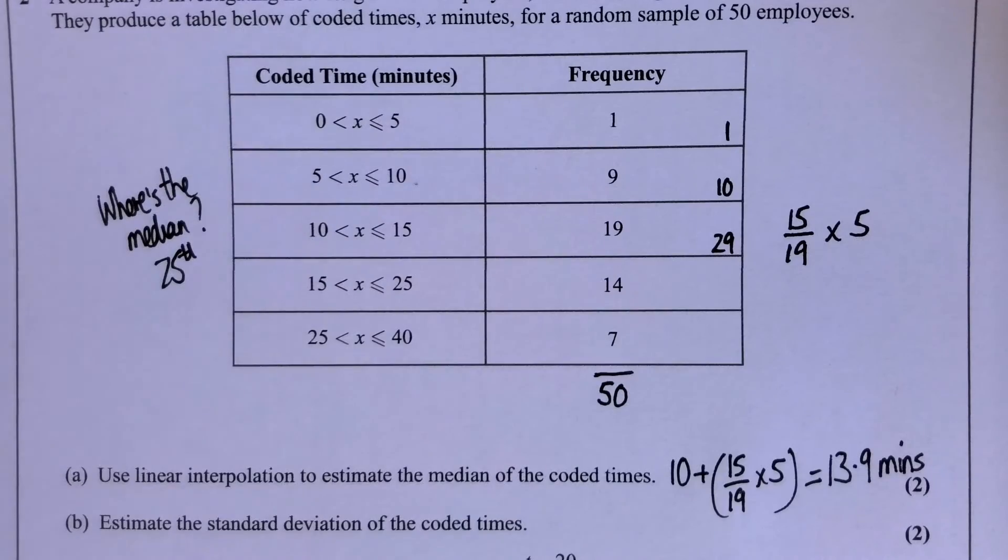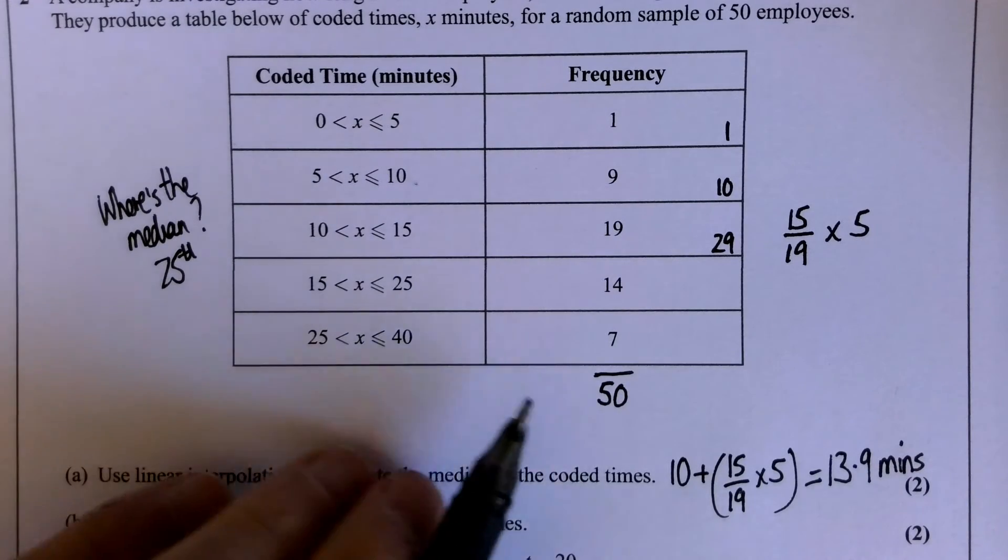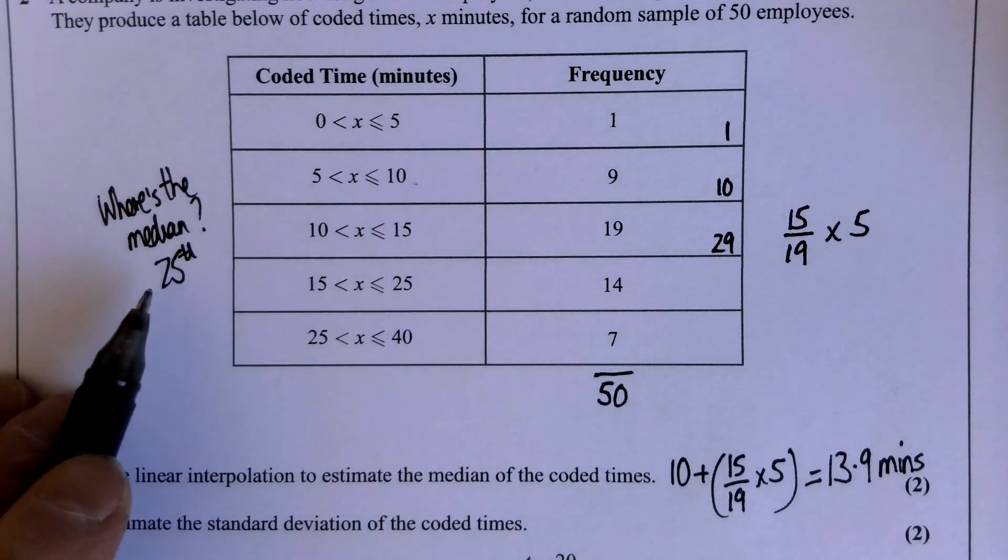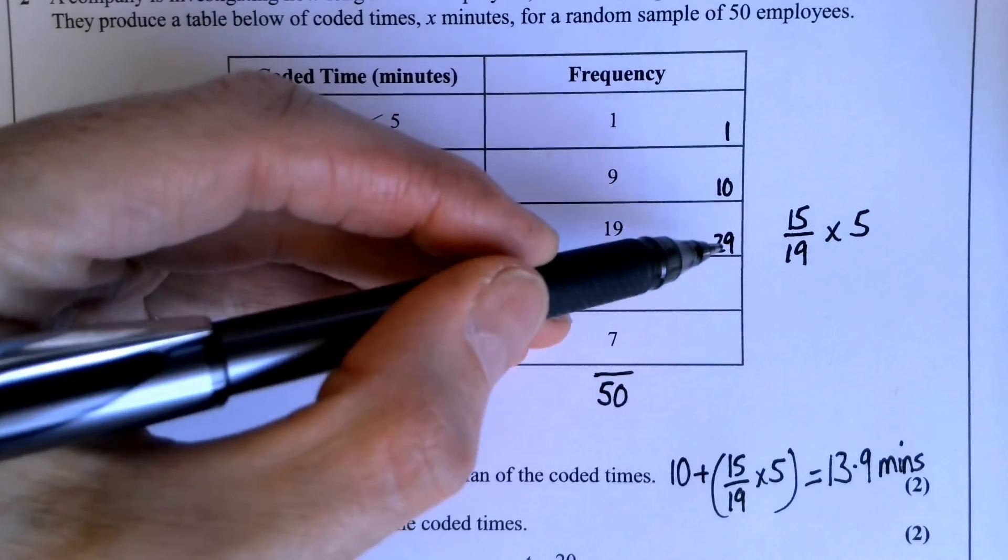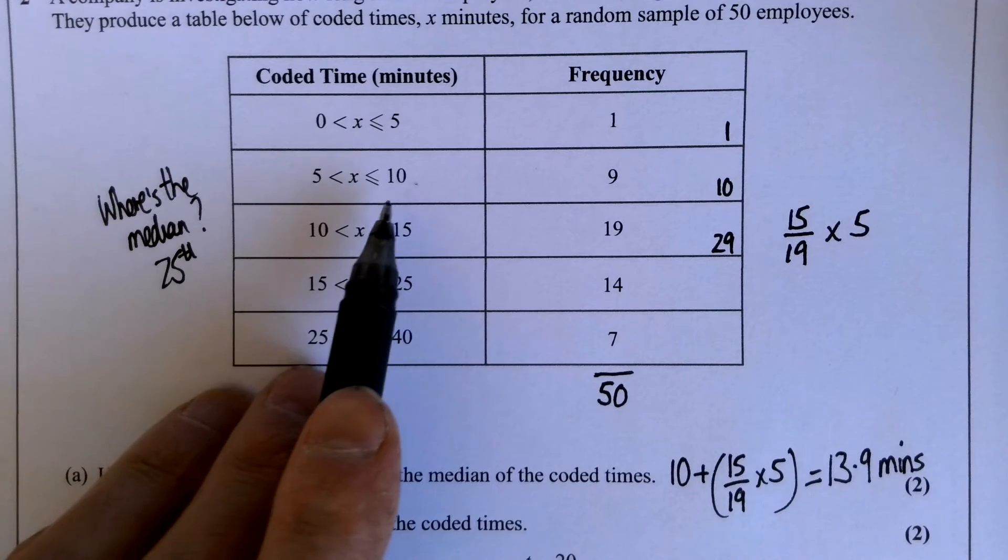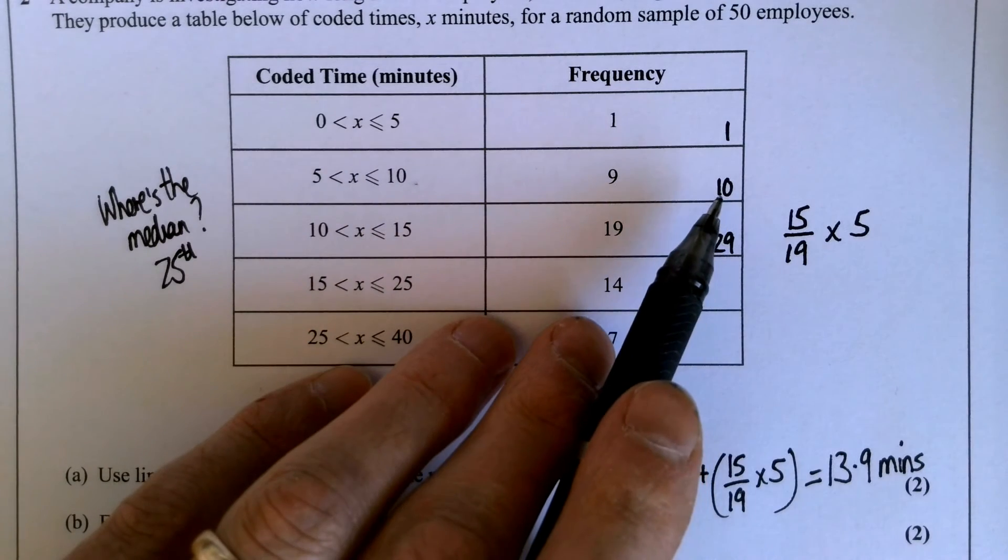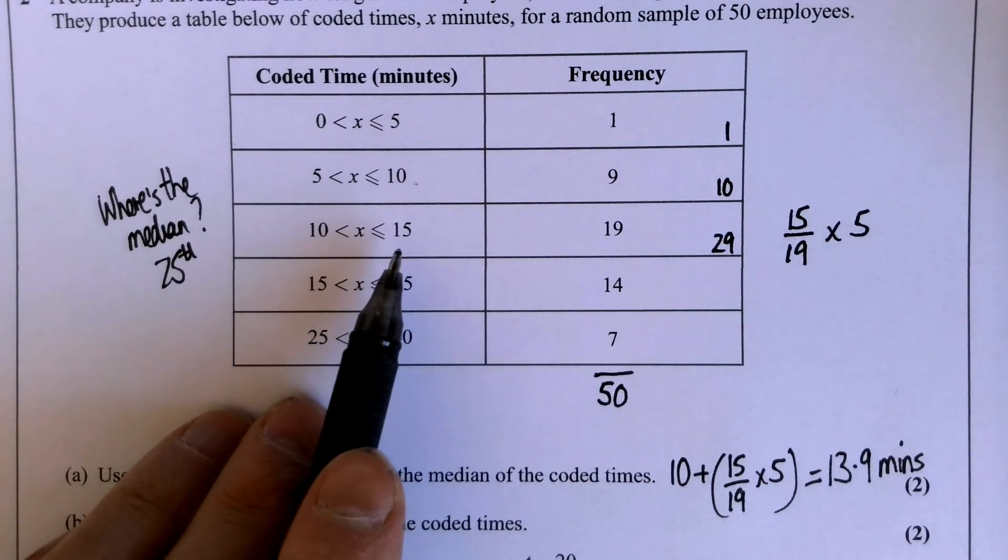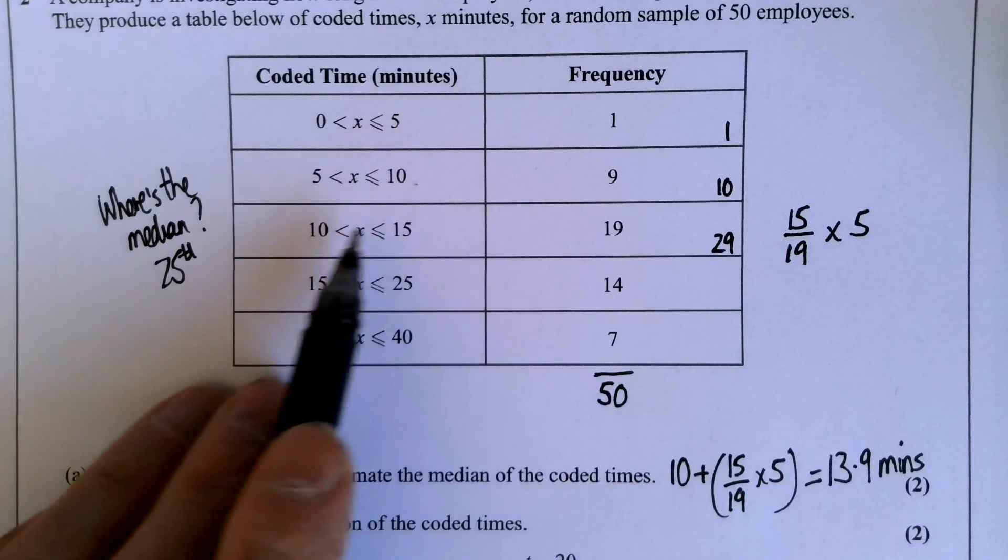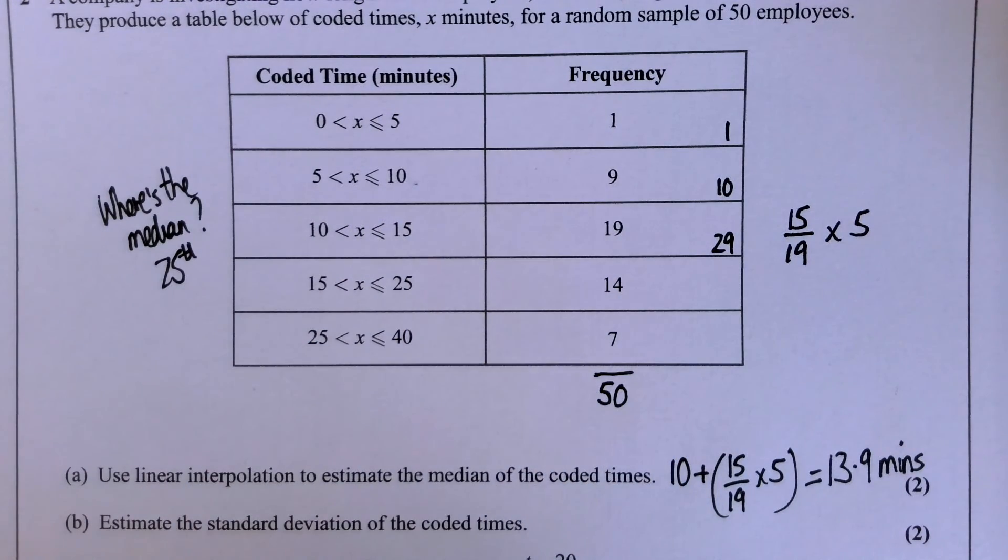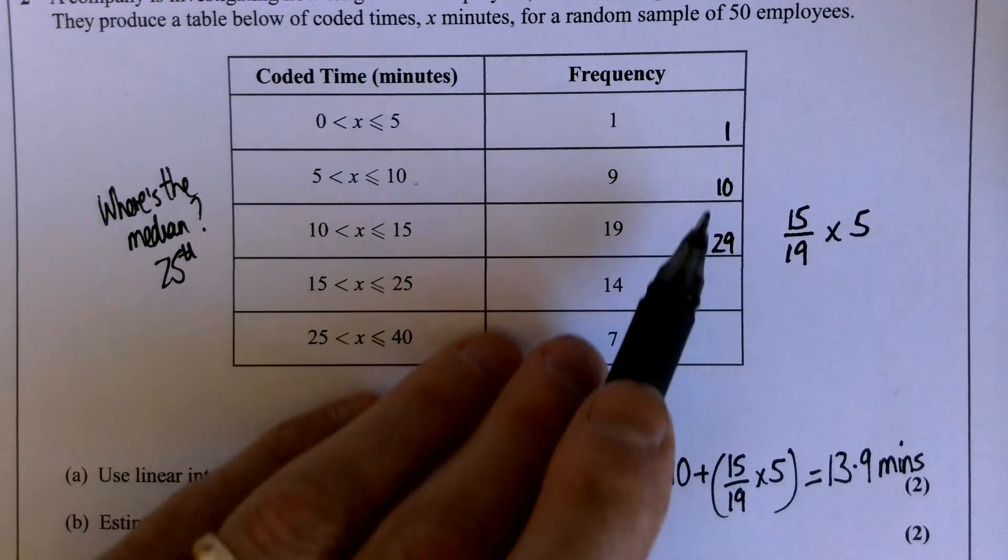Okay, so my first question is, where's the median? 50 values, so I'm looking for the 25th value. You could say strictly we're looking for 25.5, halfway between the 25th and 26th. So I do my cumulative frequencies here. By the time I get to 10 minutes, I've counted 10 people.